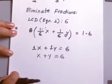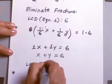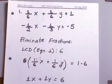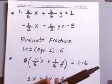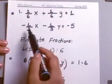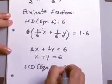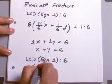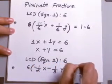For our second equation, let's find the least common denominator. The second equation is negative 1/2 x minus 1/3 y equals negative 5. Looking at denominators 2 and 3, the least common denominator is 6 again. So we do the exact same thing — multiply both sides of the equation by 6 to eliminate the fractions.